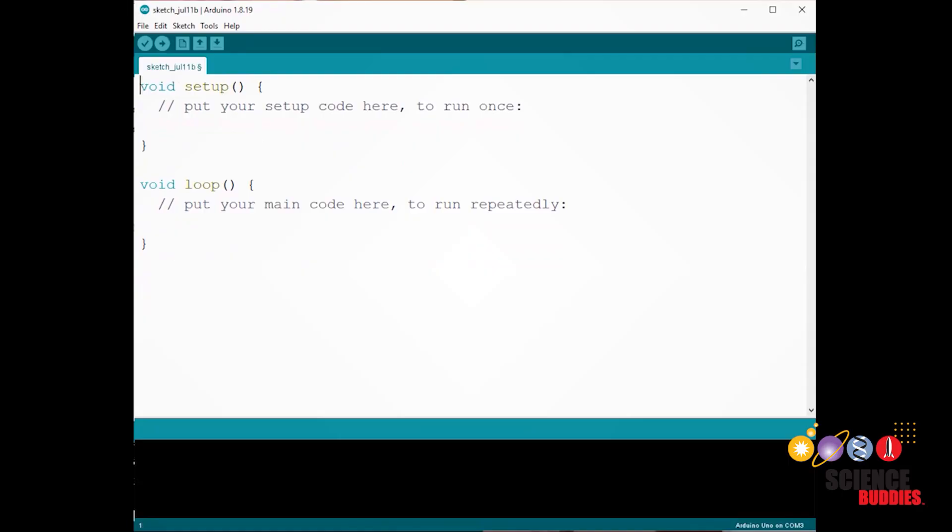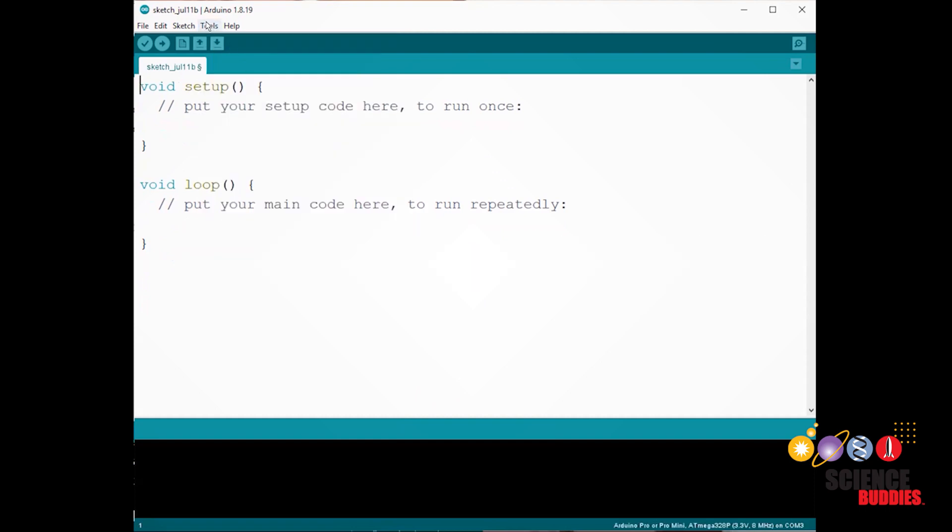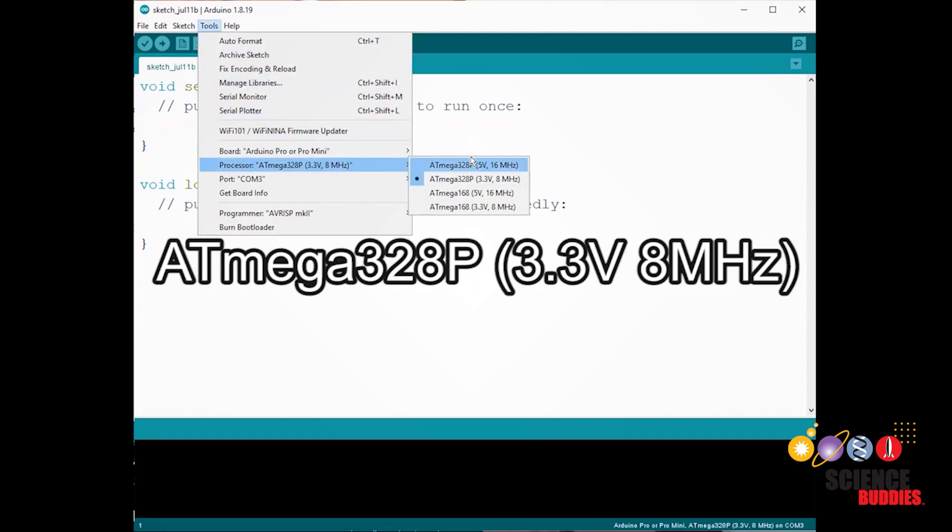Once connected, go to the top bar, select Tools, then Board. In the drop-down menu, select Arduino Pro or Pro Mini. Next, go to Tools, then Processor. Select ATmega328P, 3.3 volts, 8 MHz. This option will not appear until you have selected Arduino Pro or Pro Mini for the board.